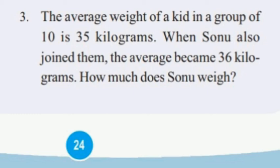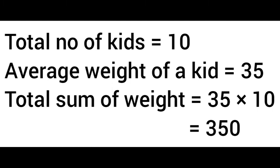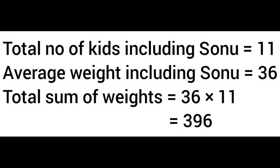For the third question, the number of students is 35, and the average age is 10. The sum of ages is 35 into 10, which gives 350. Including the teacher, the total number is 36, the new average is 11. Total sum of ages is 36 into 11, which gives 396. Teacher's age is 396 minus 350, which equals 46.